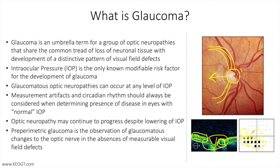There are other factors that contribute to glaucomatous optic neuropathy, for example age, ethnicity, myopia, genetics, and family history. Research continues to explore the effects of IOP-independent factors such as immunologic causes.